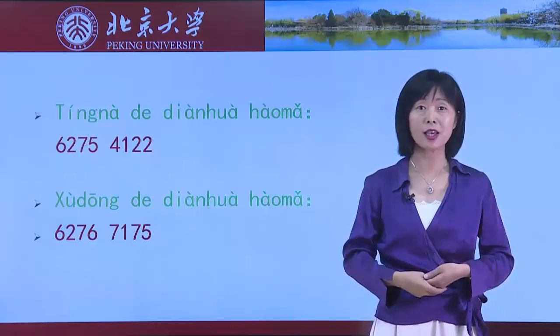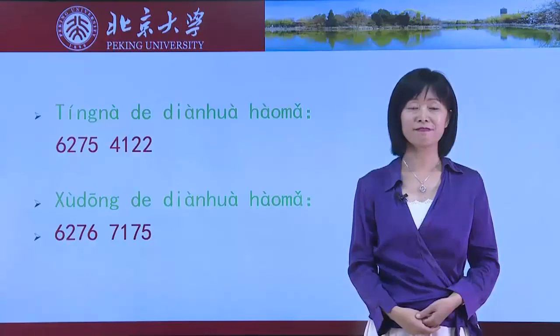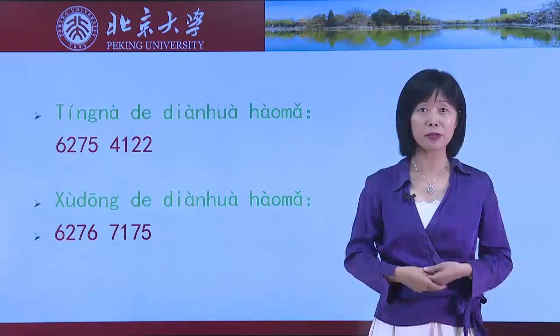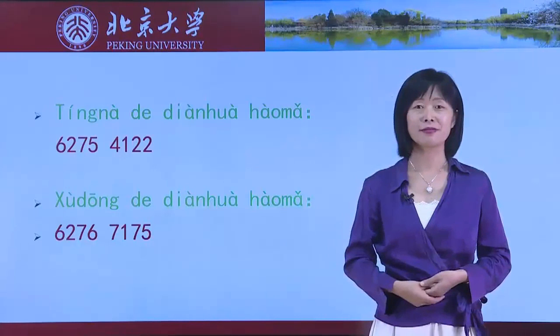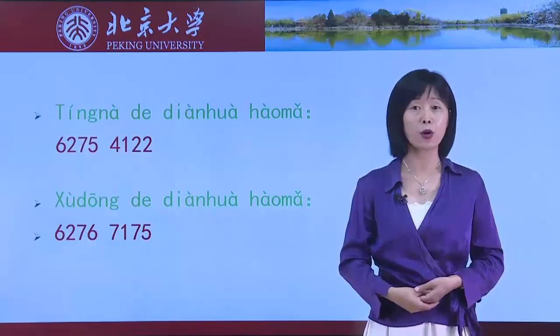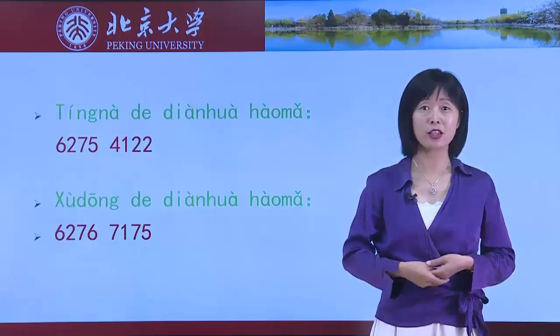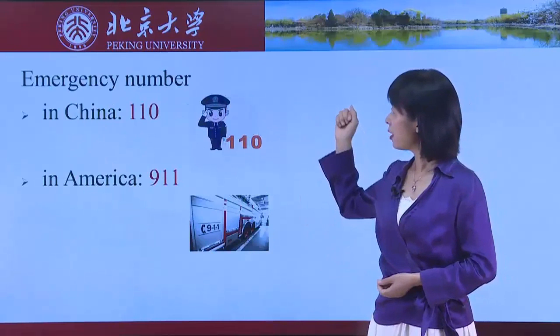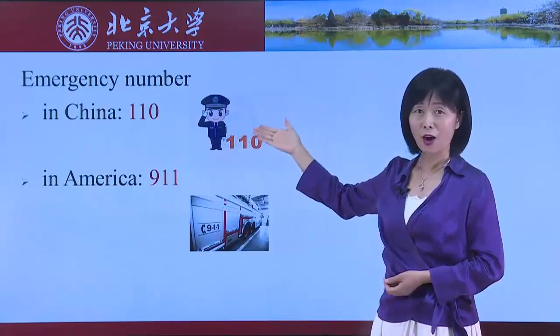Why? In speaking, when you recite numbers, if there is 一, you could say 幺 instead. That is because the pronunciation of 一 and 七 are quite similar, so to distinguish them you can change 一 to 幺. For example, the emergency number in China: 一一零。And in America: 九一一。